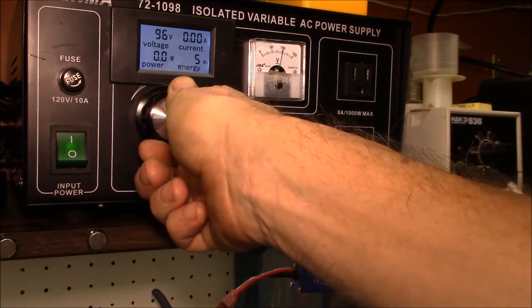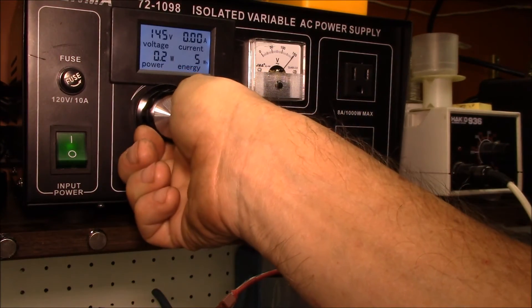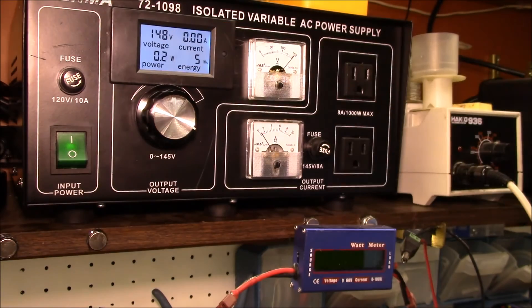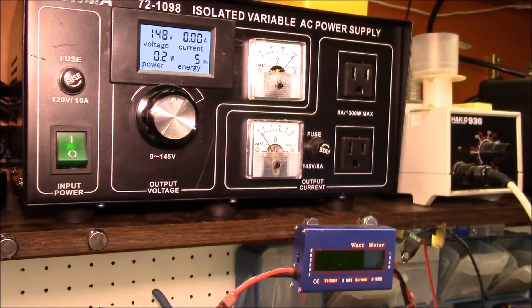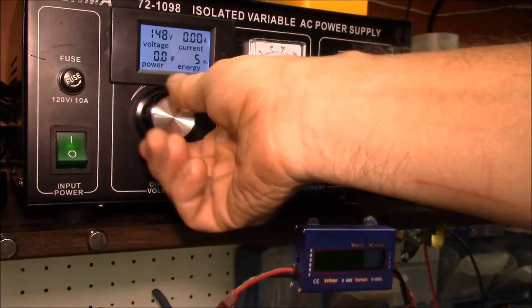If I go over here to 150... this meter is fairly accurate too. These two meters still work normally, and then I have the digital meter that can read power, amps, and watts.